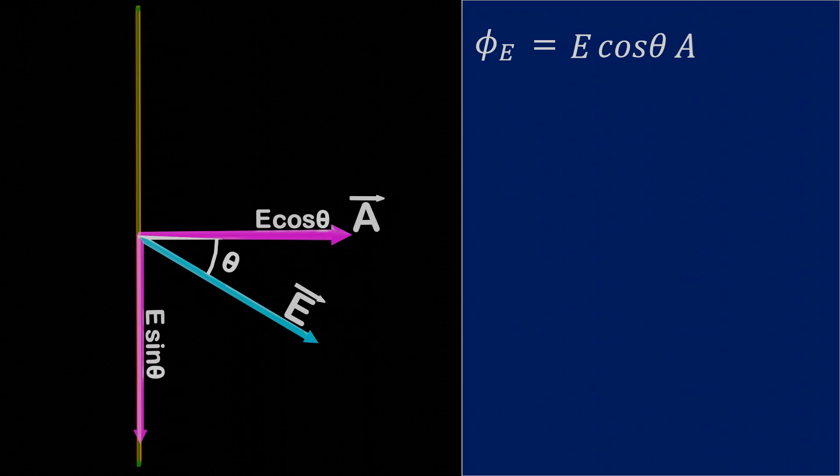Thus, we get the same equation for electric flux, which is equal to EA cos theta. From this equation, we understand that electric flux is a dot product or scalar product of electric field vector E and the area vector A.